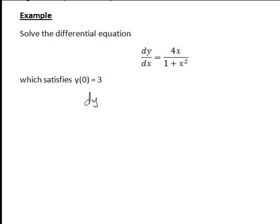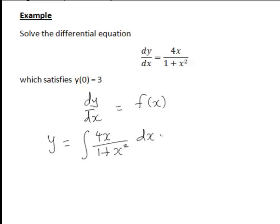Here clearly dy/dx is indeed just a function of x and so therefore we need to integrate the right hand side to find y. That is y is the integral of 4x divided by 1 plus x squared with respect to x.